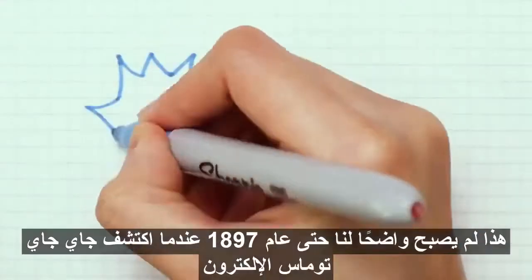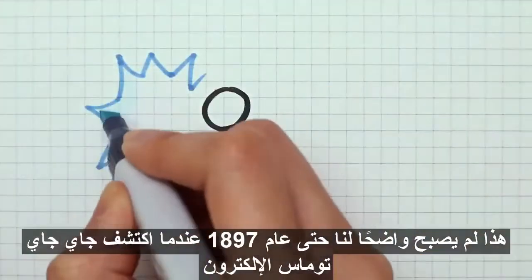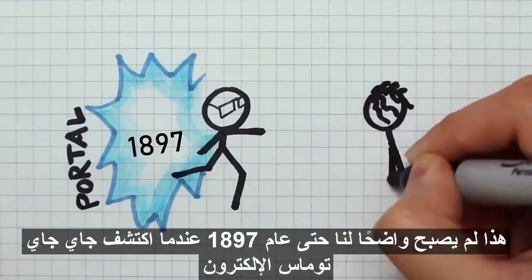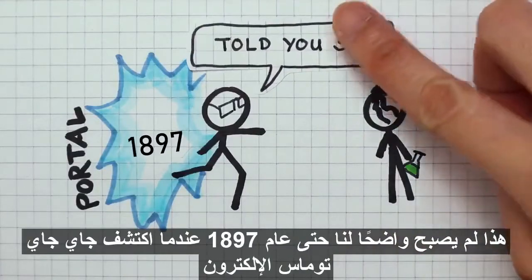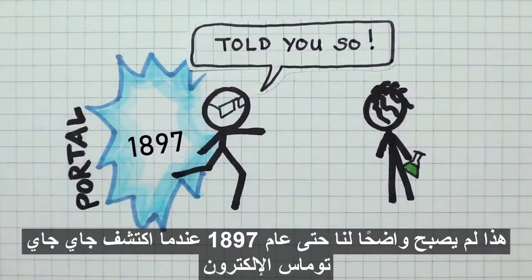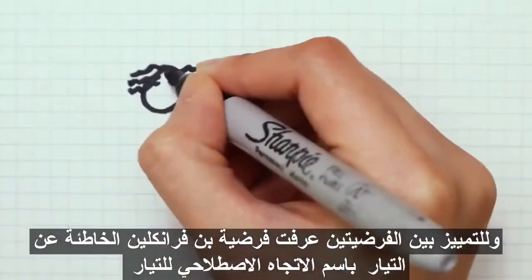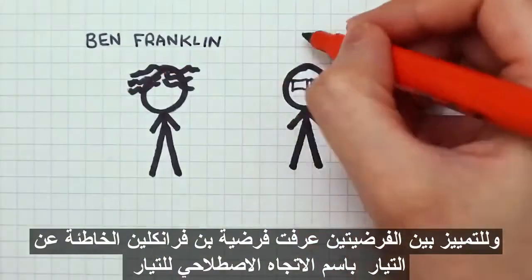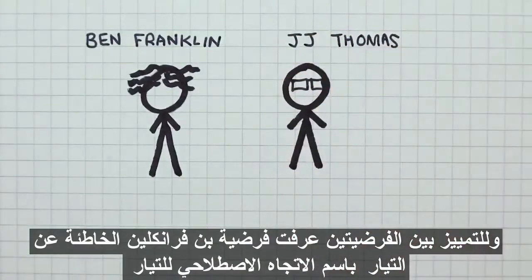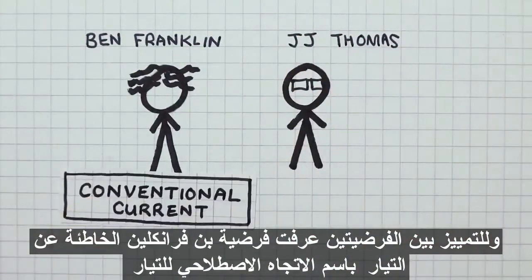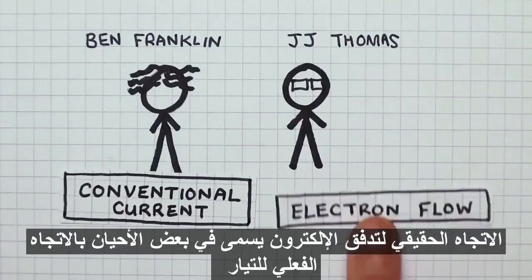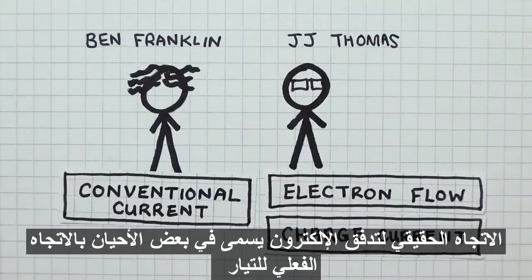This did not become apparent to us until 1897, when J.J. Thomson discovered the electron. To distinguish the two theories, Ben Franklin's incorrect theory of current is known as the conventional current. The real direction of electron flow is sometimes called the electron current.